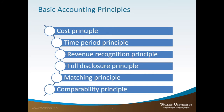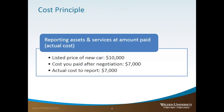The main principles are listed on this slide. The cost principle simply says that all acquired assets and services must be reported at their actual cost, also known as historical cost. This principle says that the cost of an item should be the one on the receipt — the amount that you paid.